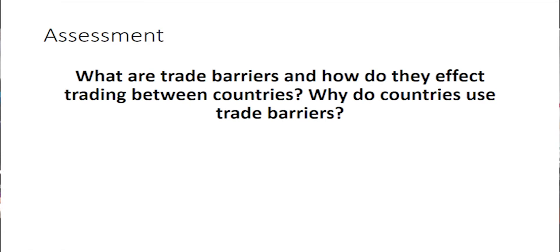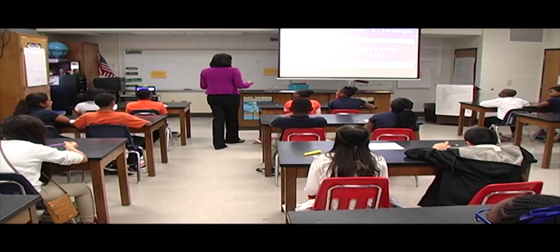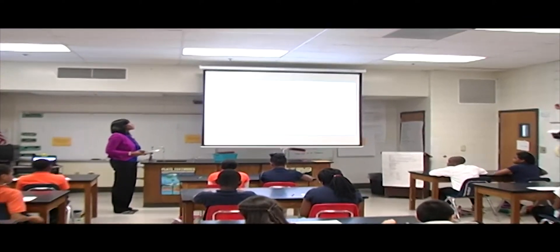By the end of the lesson, you'll have an assessment just like yesterday. The assessment for today is a writing prompt: What are trade barriers and how do they affect trading between countries? Why do countries use trade barriers? So by the end of class you should be able to answer that writing prompt. Today we're going to talk about three types of trade barriers: tariffs, quotas, and embargoes. Every time we talk about a different type, we'll ask: How does this trade barrier stop or limit trade? Take out your notes and make sure you have them in front of you.